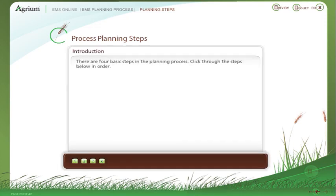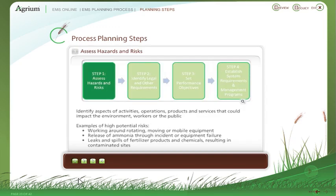There are four basic steps in the planning process. Click through the steps in order. In the first planning step, we identify all aspects of our activities, operations, products and services that could potentially impact the environment, workers or the public. It's important to understand the risks so we can manage them effectively.